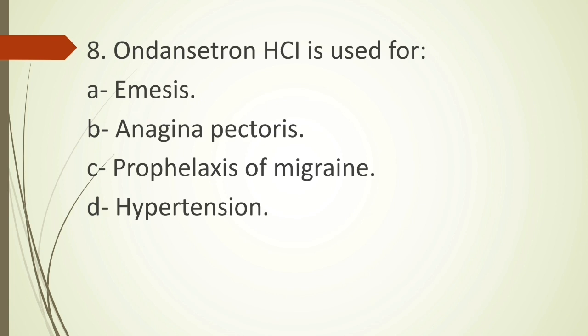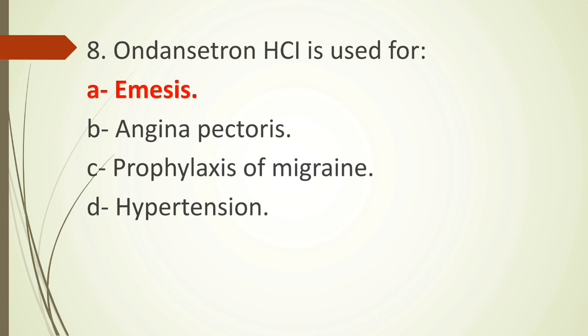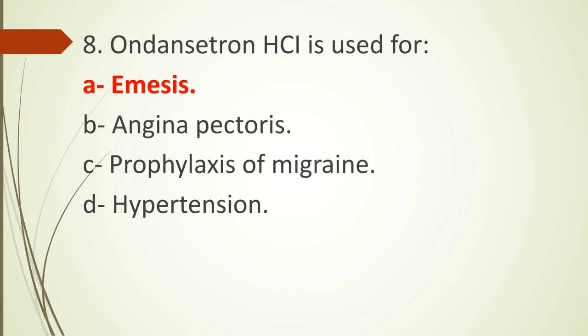Eighth question: ondansetron HCl is used for — option A emesis, option B angina pectoris, option C prophylaxis of migraine, option D hypertension. Ondansetron is a drug used for emesis, meaning treatment of vomiting. It is a selective 5-HT3 serotonin receptor antagonist and is mainly useful for chemotherapy-induced vomiting. Ondansetron is the drug of choice in chemotherapy or radiation-induced vomiting. The correct answer is option A.